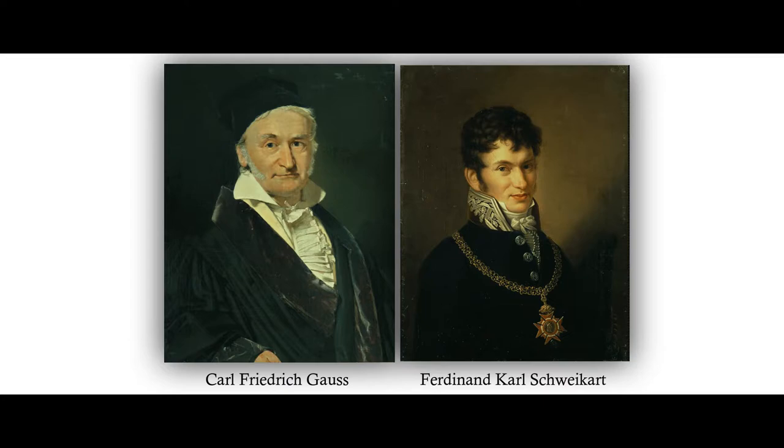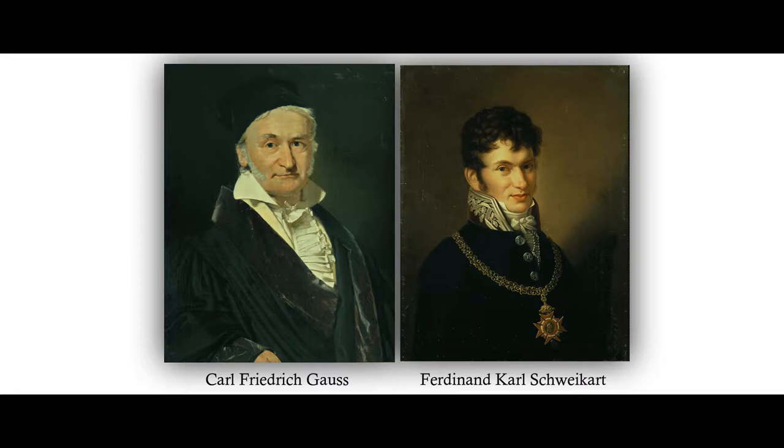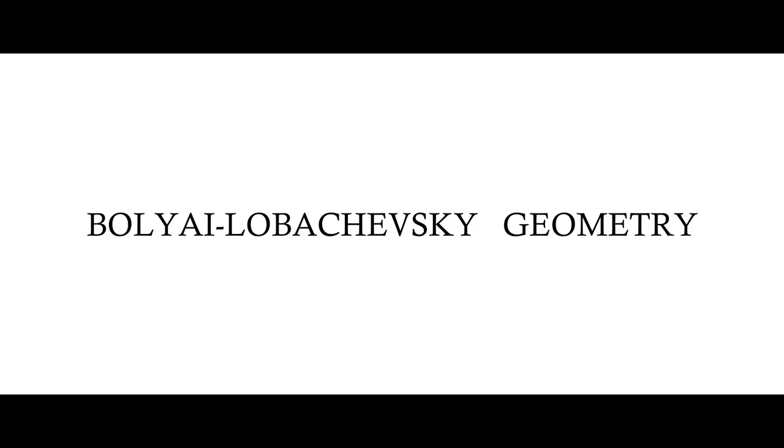Karl Friedrich Gauss and Ferdinand Karl Schweikart had the ideas of non-Euclidean geometry at the beginning of the 19th century, but they did not publish their thought. Then in 1830, Yanosh Boyai and Nikolai Ivanovich Lobachevsky separately published treatises on hyperbolic geometry. It is also called Boyai-Lobachevsky geometry.